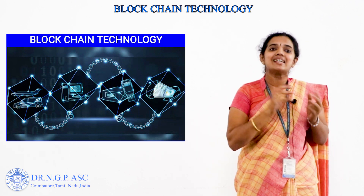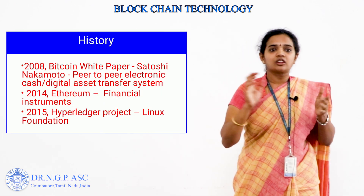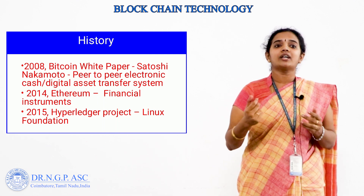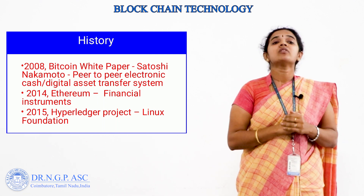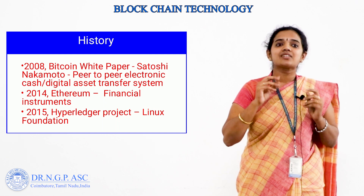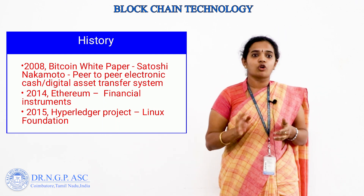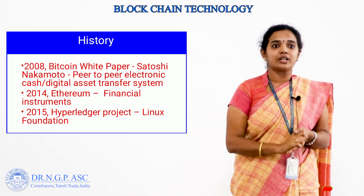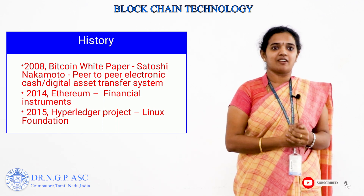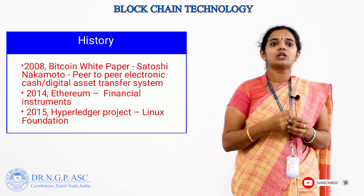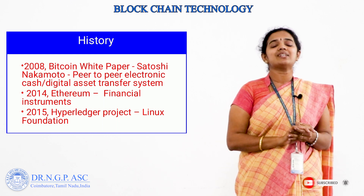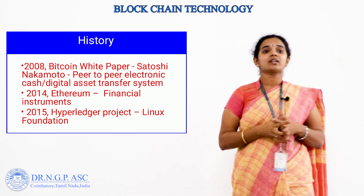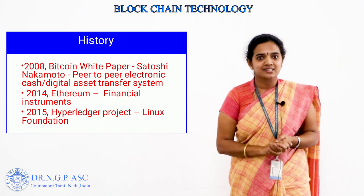Now we can see the history of blockchain technology. Satoshi Nakamoto developed a Bitcoin white paper in the year 2008, based on blockchain technology — a purely peer-to-peer electronic cash and digital asset transfer system. In 2014, Ethereum was developed and implemented with financial instruments like bonds. In 2015, the Hyperledger project was revealed by the Linux Foundation.